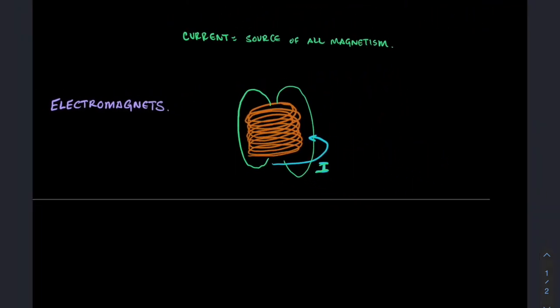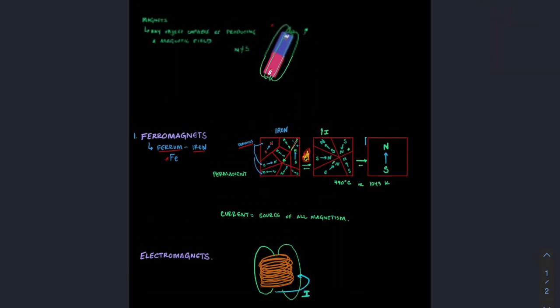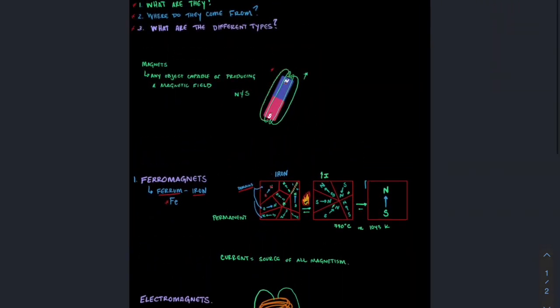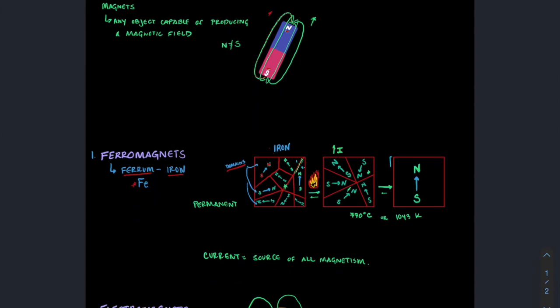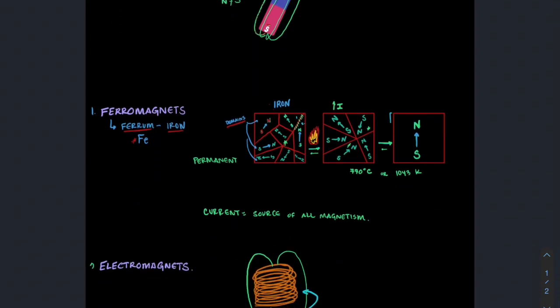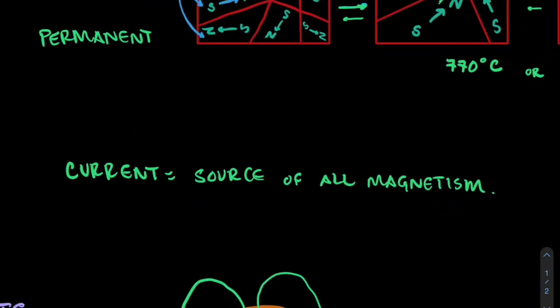So here is just kind of an overview, if I can kind of zoom out on my screen, of magnets. Just really simple: magnets are any object capable of producing a magnetic field. There are two types of magnets: first, ferromagnets, and second, electromagnets. And these ferromagnets are also known as permanent magnets. But the core principle or key takeaway from today's mini lesson is this: that the source of all magnetism is current. So hopefully that was helpful.